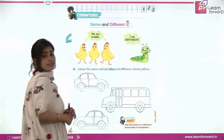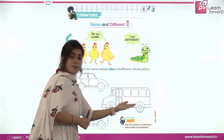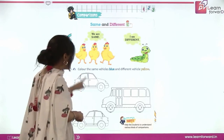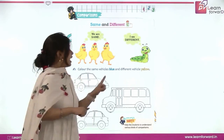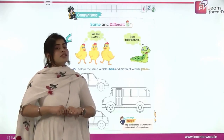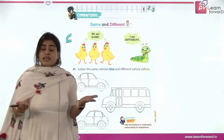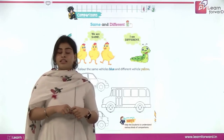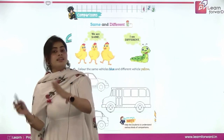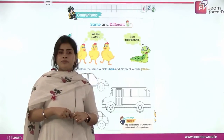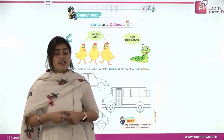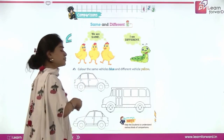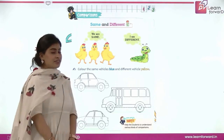Now, what do we see here? A car, a bus, and again a car. So what do we have to do here? We have to color the same vehicle in blue color and different vehicles in yellow color. Can you tell me which vehicle is same and which is different? A vehicle is something that makes you travel from one place to another — like a bus, train, or car.